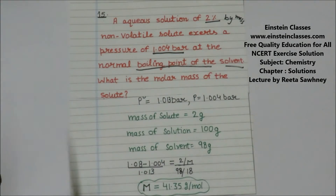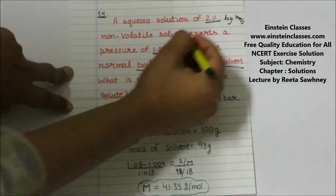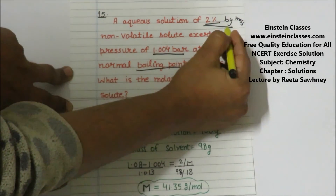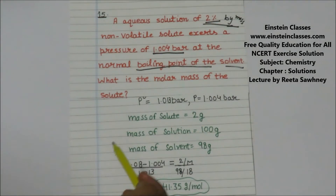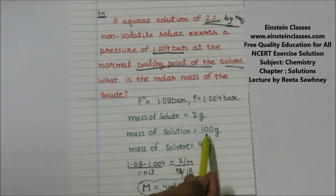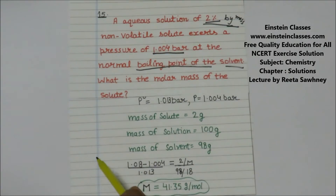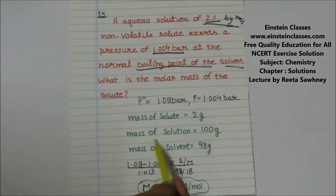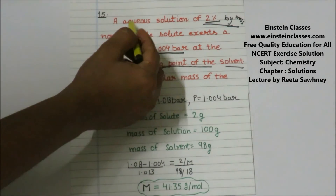P₀ is 1.013 bar and the vapor pressure of the solution is 1.004 bar. We are given 2% by mass of the non-volatile solute, which means the mass of solute is 2 grams and the mass of solution is 100 grams — so in 100 grams of solution, 2 grams of non-volatile solute is present. Therefore, the mass of the solvent (water) would be 98 grams.